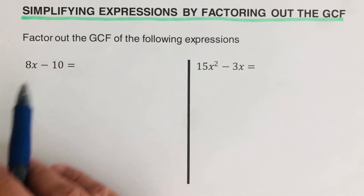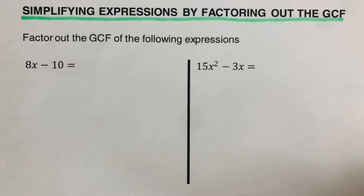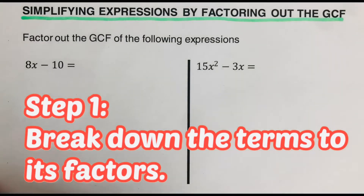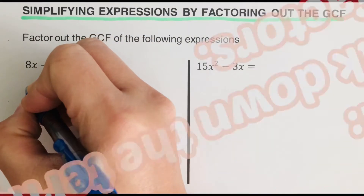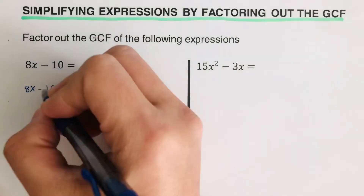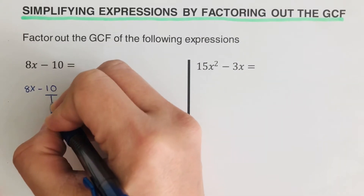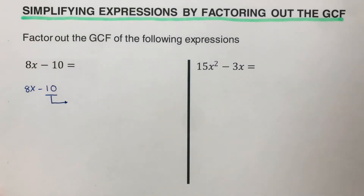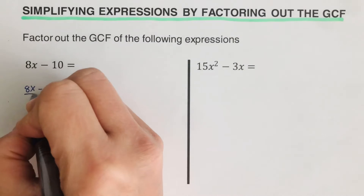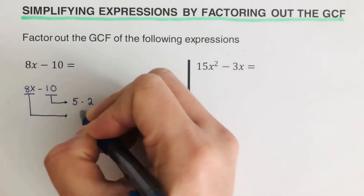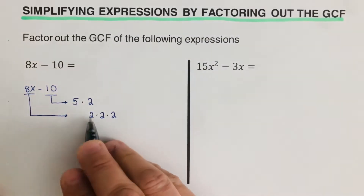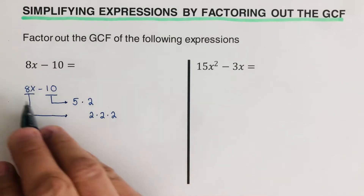We have 8x minus 10. The first step is to break down the terms to their factors. The factors of 10 are 5 and 2, so we write that as 5 times 2. For 8x, we factor it out as 2 times 2 times 2, since 2 times 2 is 4 and 4 times 2 is 8.